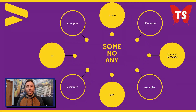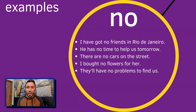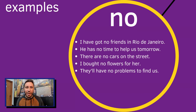Let's see some examples with the word no. I have got no friends in Rio de Janeiro. Translation: eu não tenho nenhum amigo no Rio de Janeiro. Notice that in Portuguese the translation is singular, but in English there is no problem using no before friends, which is a plural word. I've got no friends in Rio de Janeiro.